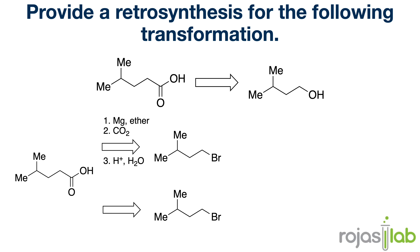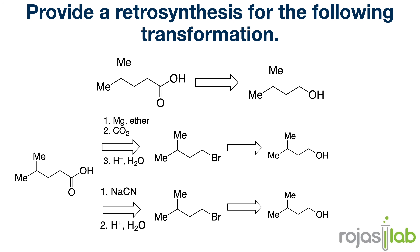The other common strategy is using sodium cyanide to extend the carbon chain and make a cyano functional group. By introducing a strong acid and heat, we can turn that cyano group into a carboxylic acid. Both of these strategies rely on the previous reactant being an alkyl halide to do that substitution reaction. And we can turn alcohols into alkyl halides — specifically an alkyl bromide — using phosphorus tribromide. Then from there, you just write out the reagents in the forward direction.